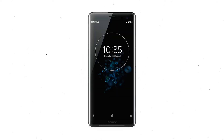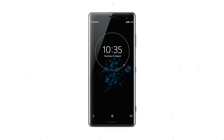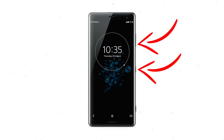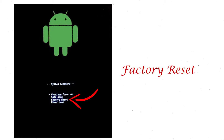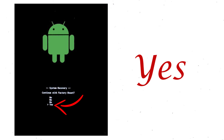Power off your mobile by holding the power button. Press and hold the volume down button and power button. When you see the recovery mode screen, release all the buttons. Select factory reset using the volume buttons and confirm with the power button. Finally, choose the yes option.